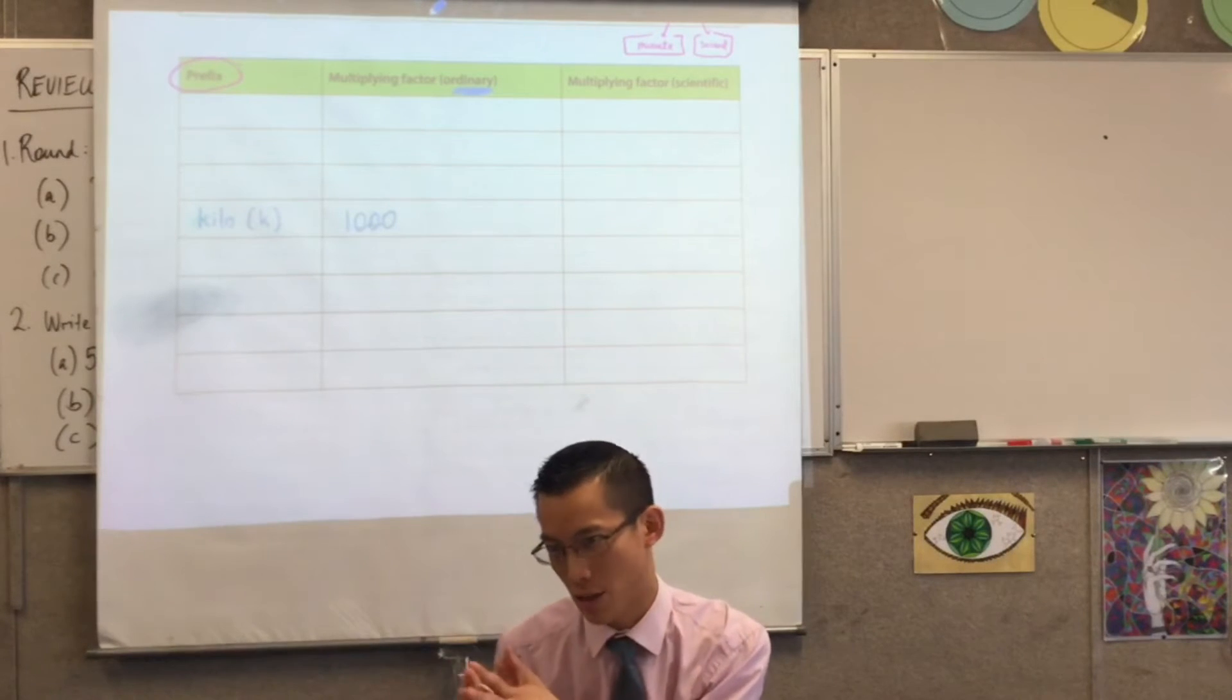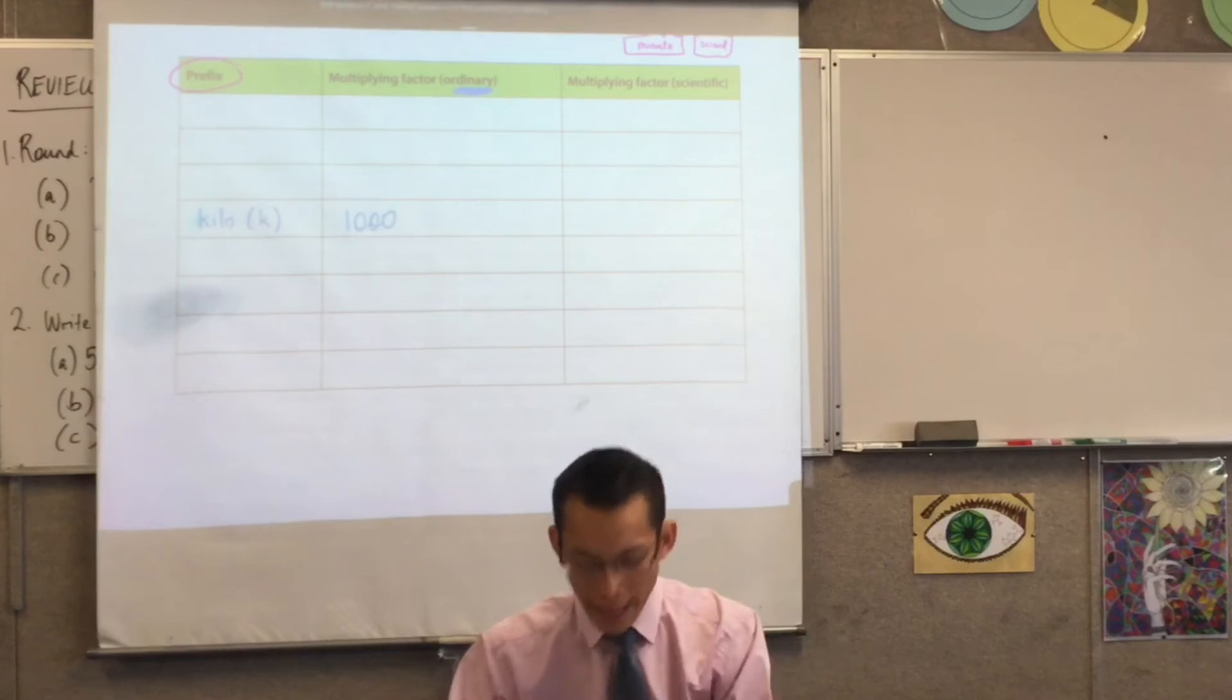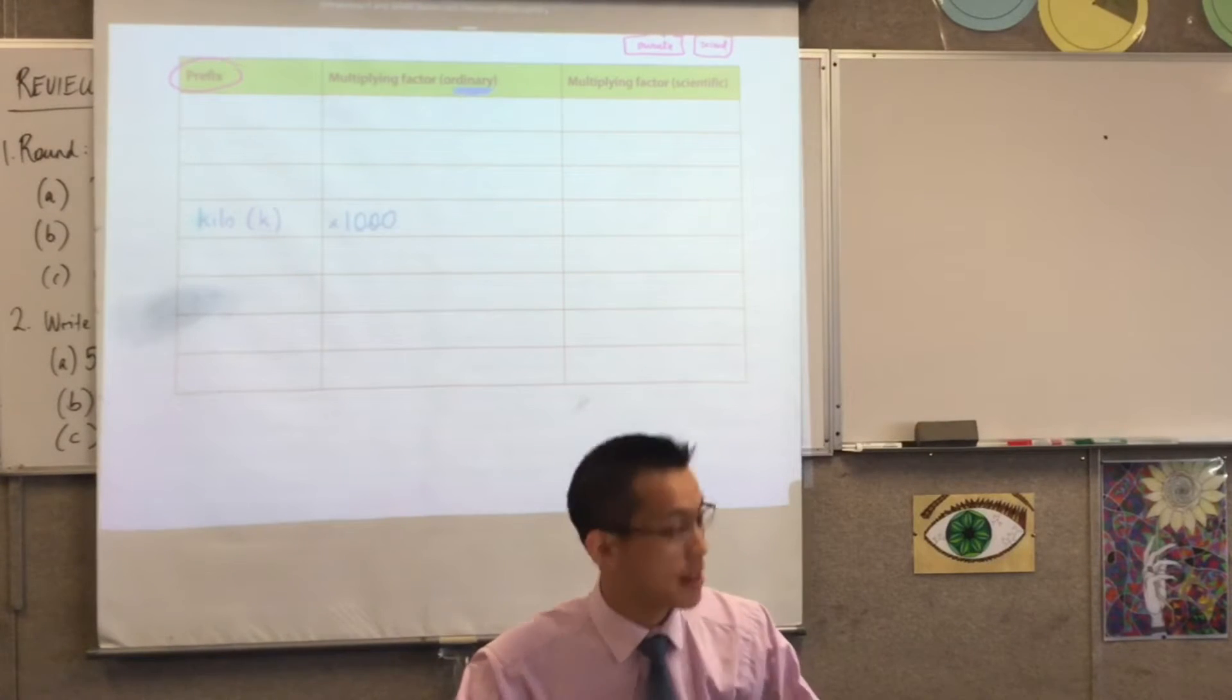So, how would we write 1,000 in scientific notation? Okay, good. So, being that this is like times 1,000, I'm just going to have times 10 to the power of 3 because that's how many zeros there are.